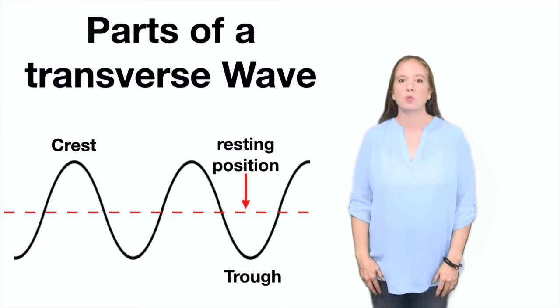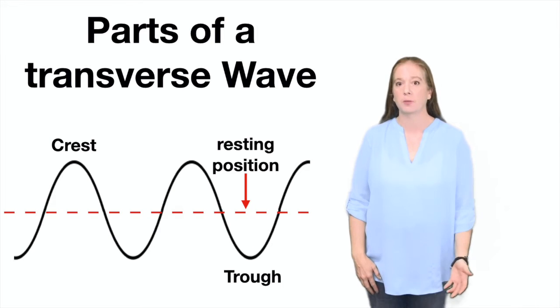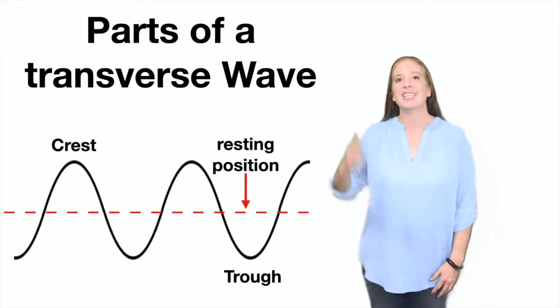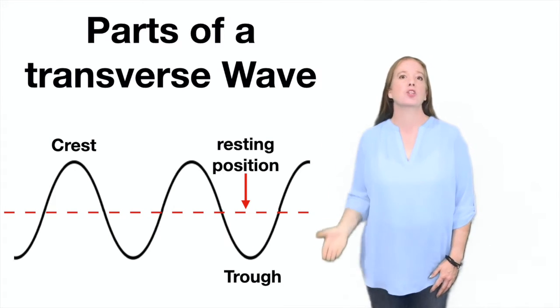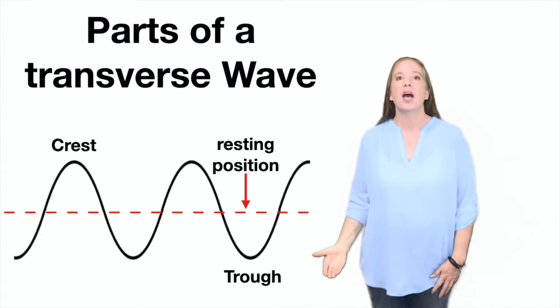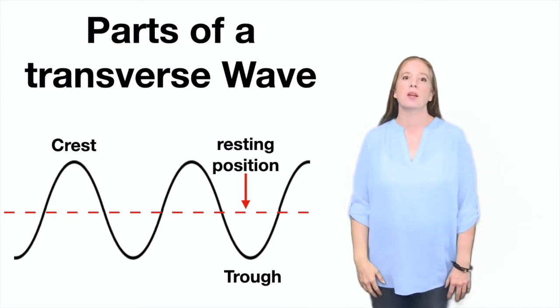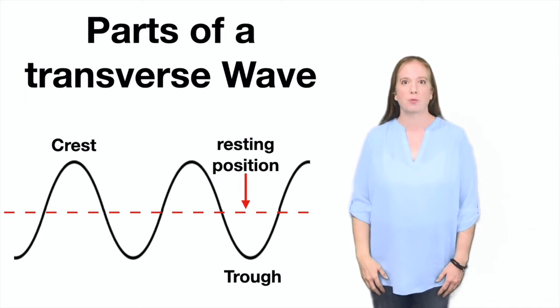A transverse wave has a crest, a trough, and a resting position. The crest is the highest part of the wave, the trough is the lowest part of the wave, and the resting position is where the wave would be if there was no disturbance moving through it.